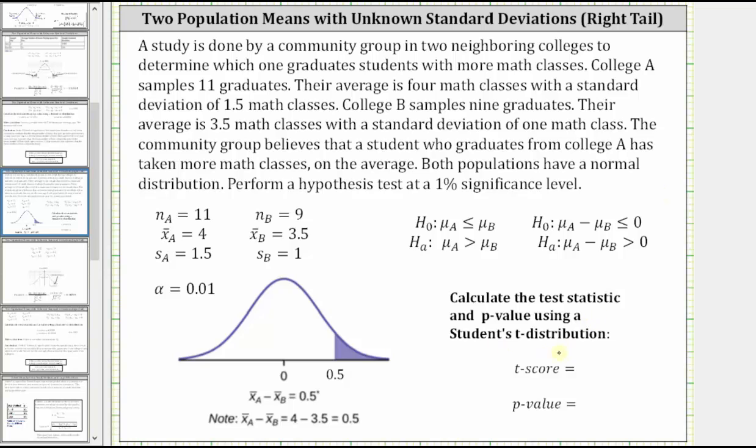Now, before we determine the t-score and p-value on the TI-84, let's take a look at this graph here, shown on the left. Notice using the sample data, X bar sub A minus X bar sub B is equal to 4 minus 3.5, which is 0.5. So the difference of the sample means is 0.5. If they weren't different, the difference would be zero, which is at the center of the distribution, shown here. And then we have 0.5 on the right.